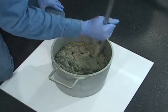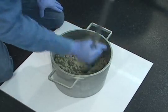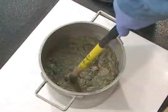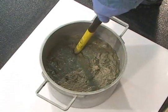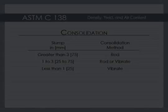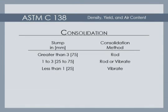Concrete in the measure is consolidated either by rodding or vibration, depending on the measured slump. Rod concretes with a slump greater than 3 inches. Vibrate concretes with a slump less than 1 inch. Rod or vibrate concretes with a slump of 1 to 3 inches.